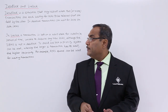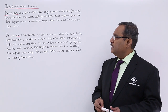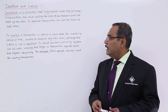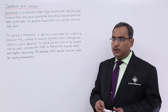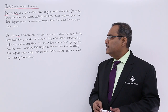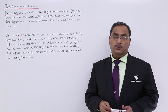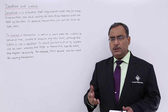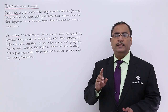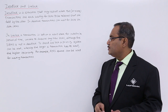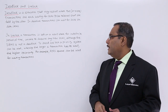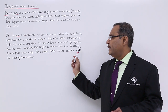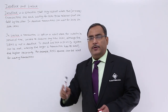In livelock, a transaction is left in a wait state for an indefinite period of time, unable to acquire any new locks, although the DBMS is not in deadlock. New locks are not being granted and transactions are waiting, but the DBMS is not in a deadlock situation. To avoid livelock, a priority system can be used whereby the longer a transaction has to wait, the higher its priority.